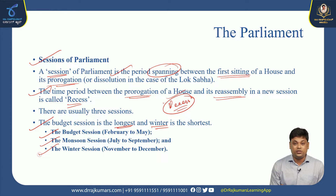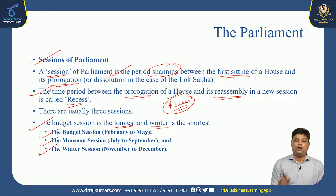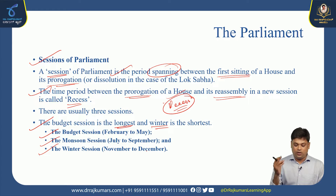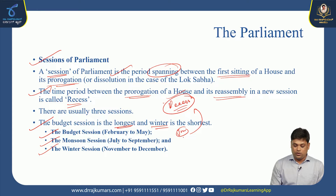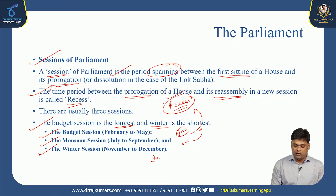There are usually three sessions of Parliament in India. The budget session is the longest, from February to May. The monsoon session runs from July to September. The winter session, which is the shortest, runs from November to December. The gaps between sessions — such as June and October — are known as recess periods.